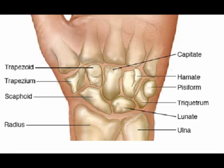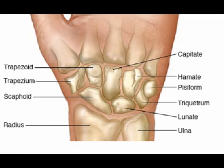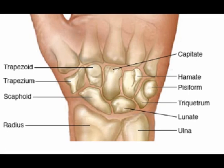The distal row, going from radial to ulnar, includes the trapezium, the trapezoid, the capitate, and the hamate.